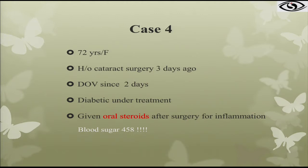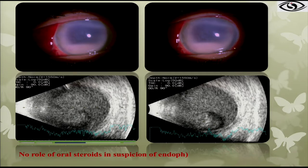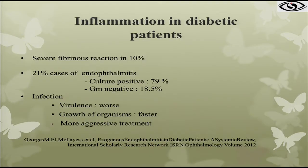Case 4: a diabetic patient who had cataract surgery three days ago presented with diminution of vision for two days and had been given oral steroids. When he presented to us, his random blood sugar was 458. He had almost a full hypopion and B-scan showed severe vitreous cavity involvement. One needs to understand there is no role for oral steroids whenever you suspect endophthalmitis, and especially never use oral steroids in diabetic patients.